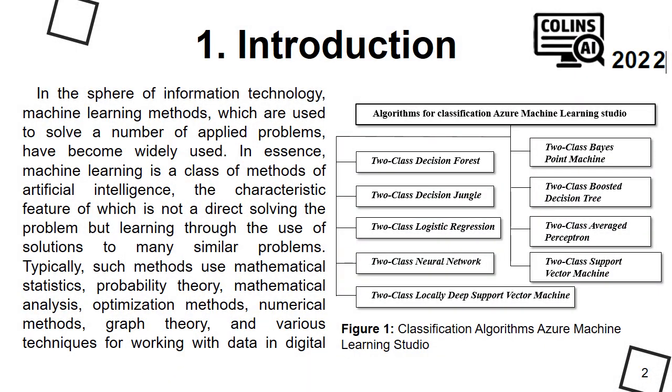Algorithms that solve the classification problem have been known for a long time. In mathematical statistics they are also called problems of discriminant analysis. In machine learning, the problem of classification is solved in particular by means of a large number of algorithms including those with the application of methods of artificial neural networks.